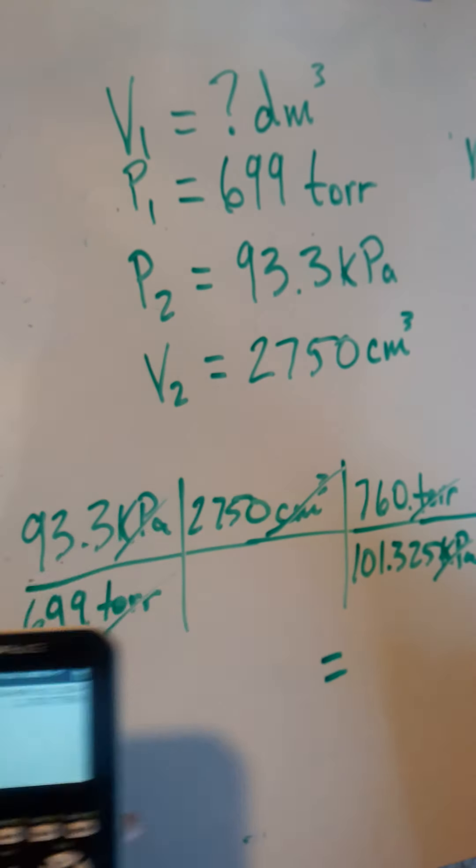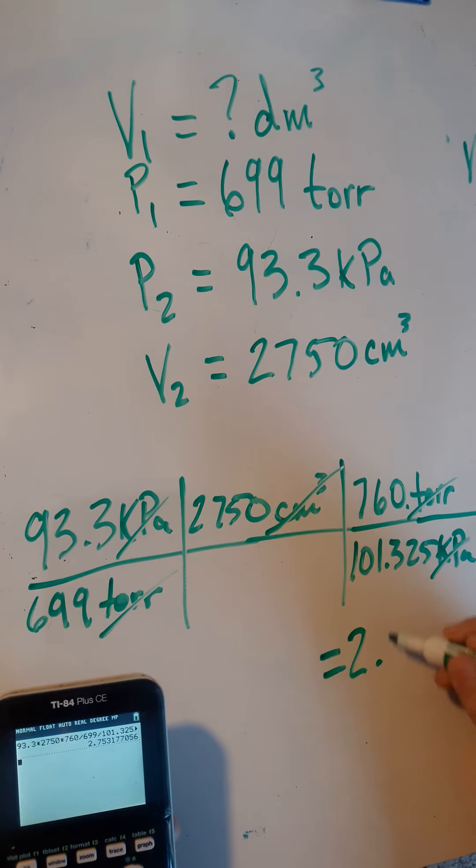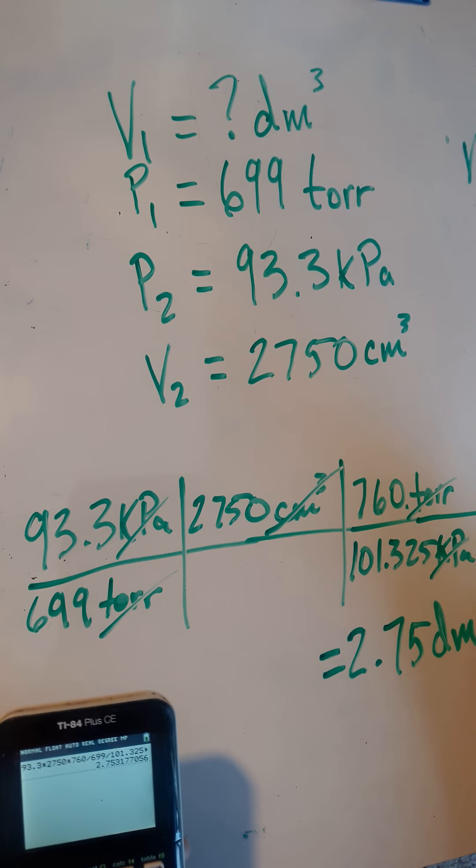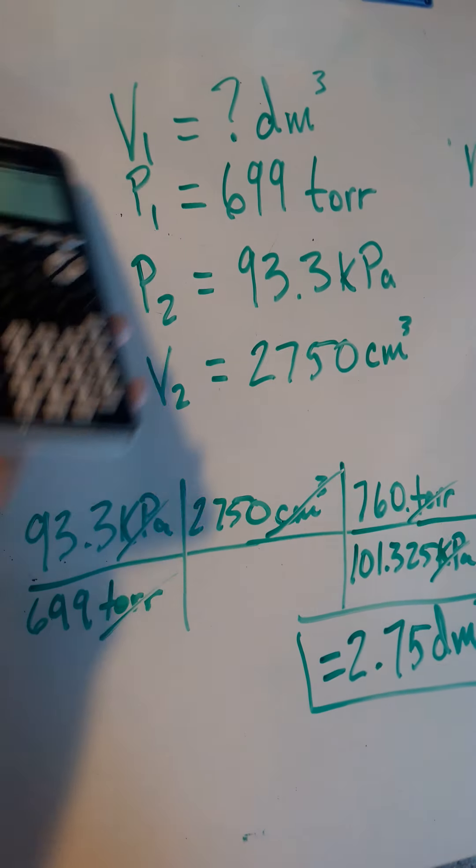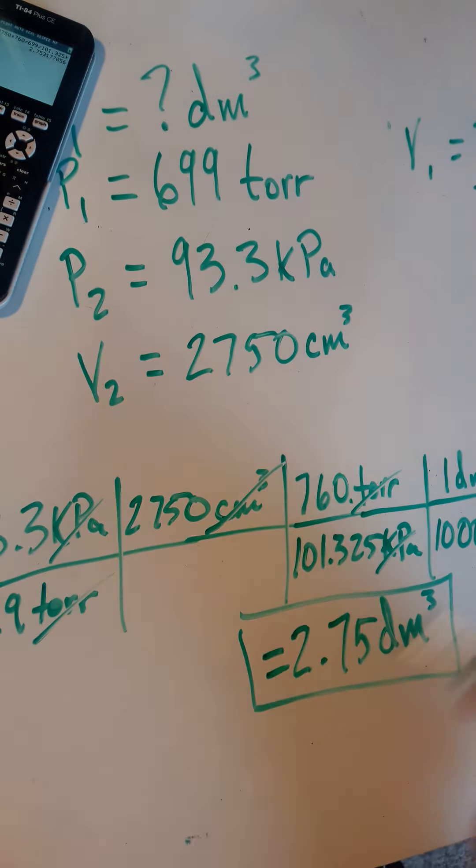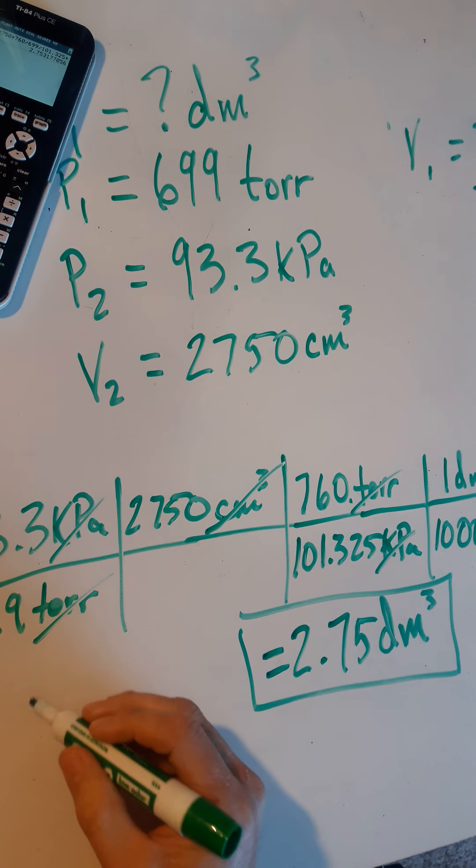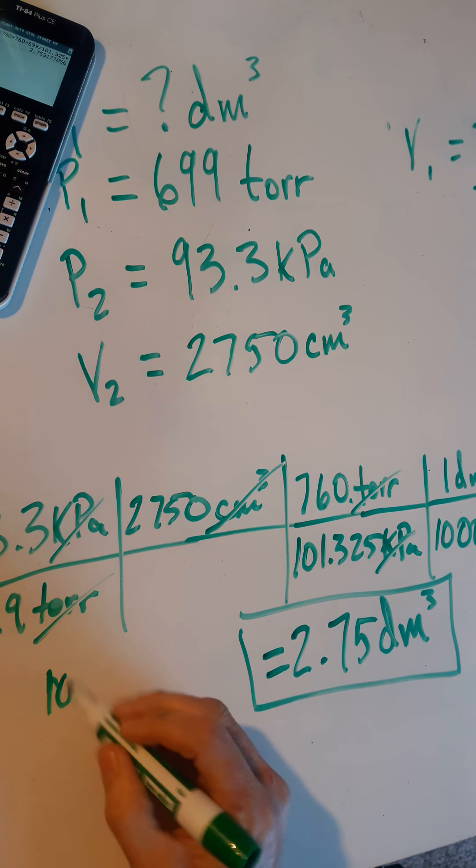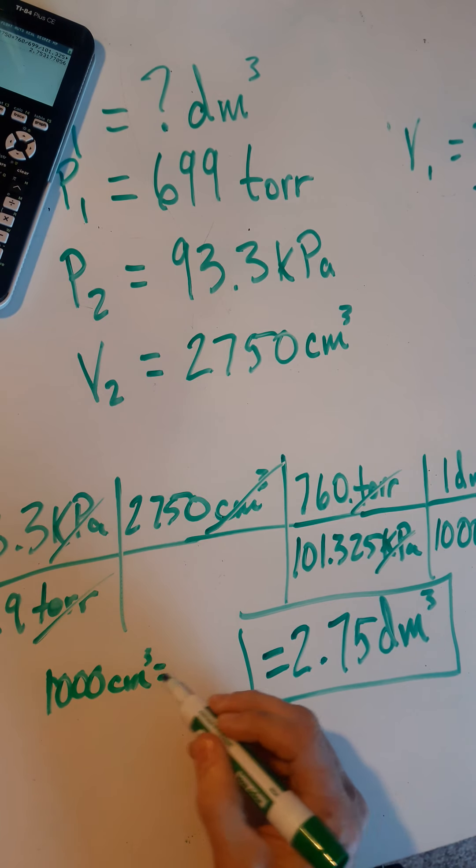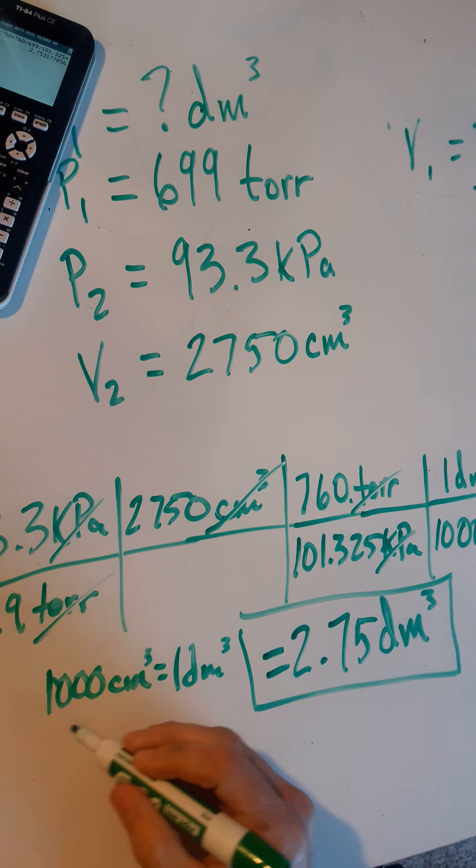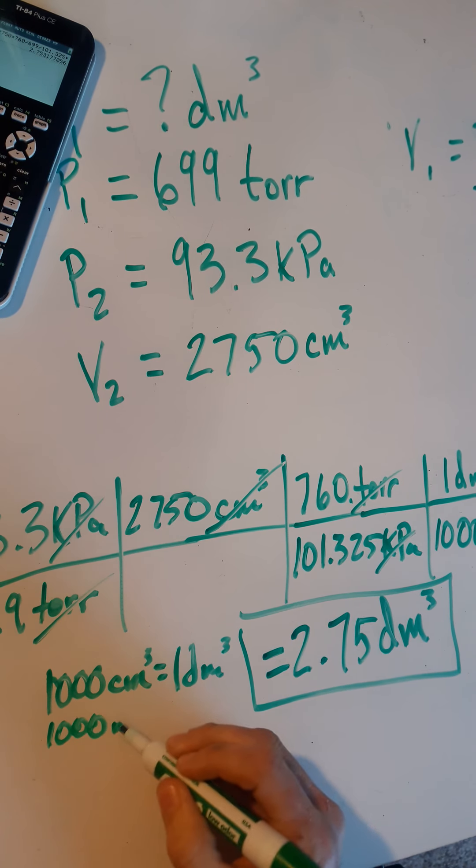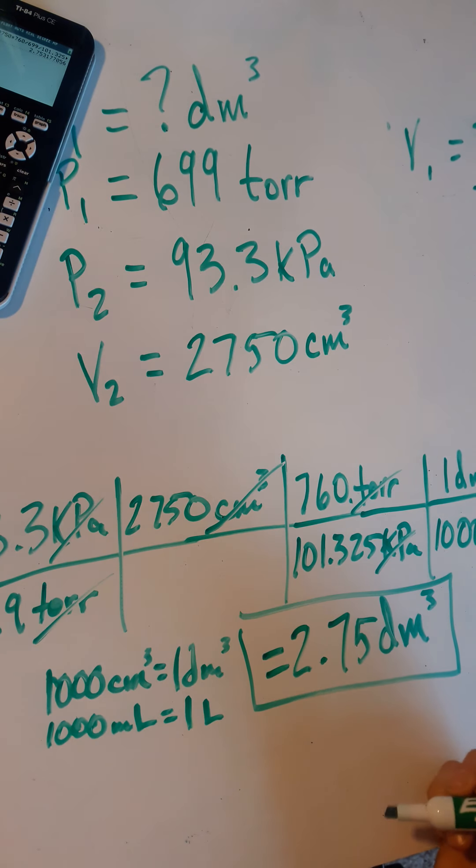This gives me an answer of, with three significant digits, 2.75 decimeters cubed. Hopefully you caught that, but the conversion for volume is 1,000 centimeters cubed is equal to one decimeter cubed. That's your conversion. Or 1,000 milliliters is equal to one liter. That might be on your equation sheet, but I'm not sure.